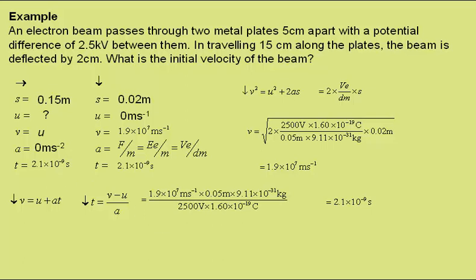All that remains is to use velocity is equal to displacement over time in the horizontal direction. Putting in the values gives an initial horizontal velocity of 7 times 10 to the 7 meters per second.